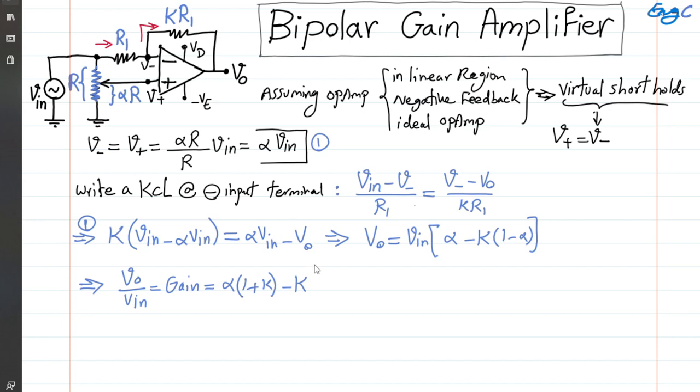For instance, if K equals 1, then the gain equals 2*alpha - 1. Depending on what we set for the potentiometer, if alpha equals 1/4, then we get a gain of -0.5, which is actually an attenuator.